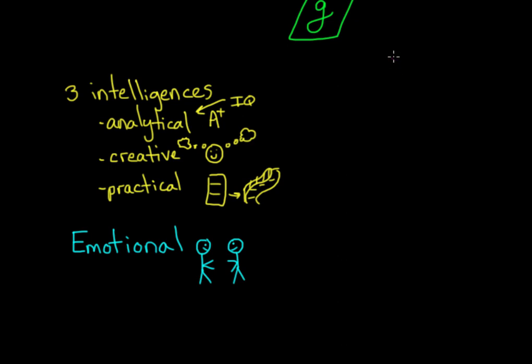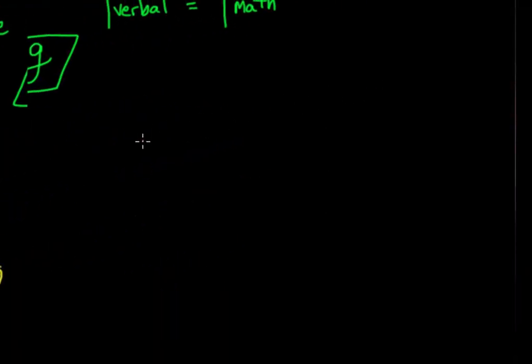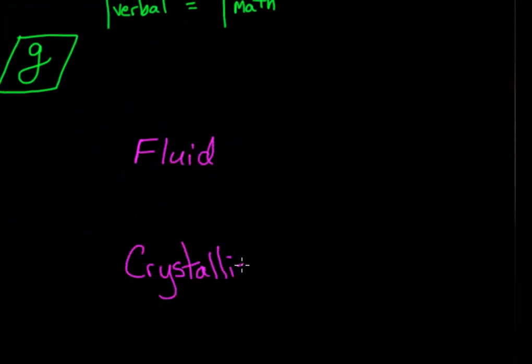Yet another way of thinking about intelligence is in terms of two major categories, fluid intelligence and crystallized intelligence. Fluid intelligence is our ability to reason quickly and abstractly, such as when we're solving novel logic problems.